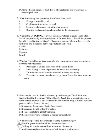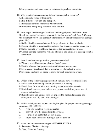Number 9. What is one possible disadvantage of using nuclear energy? A. Harmful gases are released into the atmosphere. B. Drilling for uranium could leak waste into the ocean. C. Accidents could cause radiation to leak into the environment. D. Large number of trees must be cut down to produce electricity.